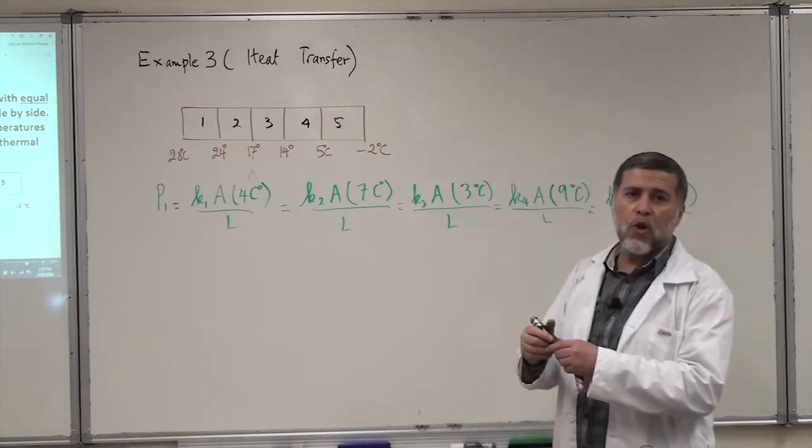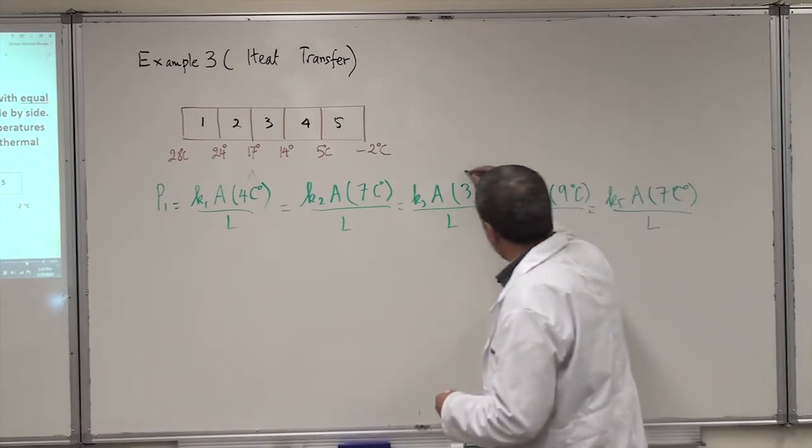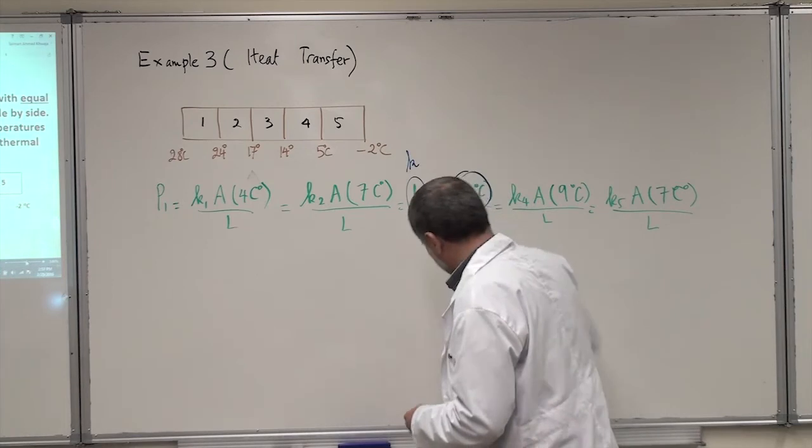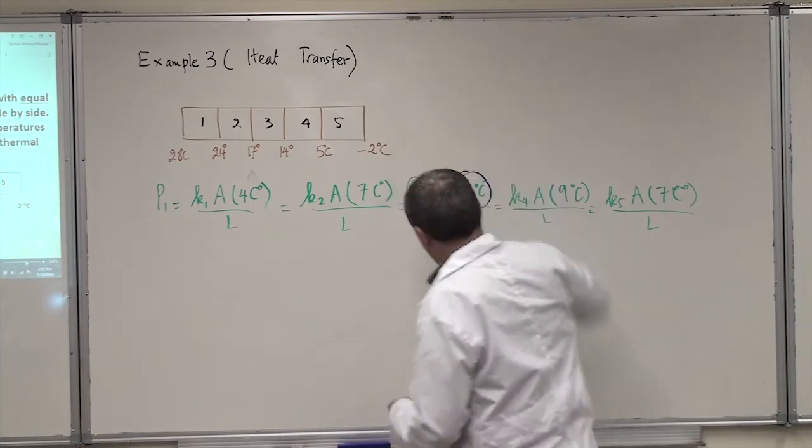So, what is the lowest delta T? The lowest delta T is this number here. So, this will be the highest. This will be the highest K. Highest thermal conductivity. Highest.